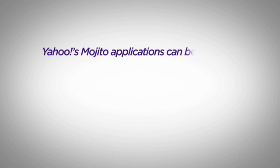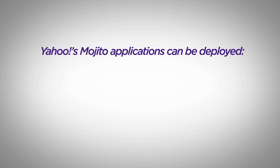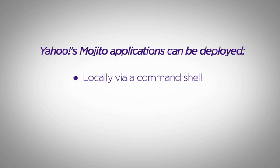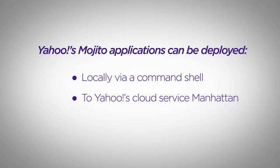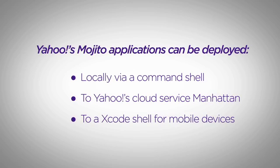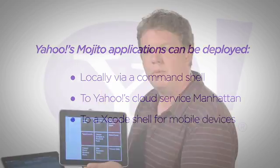So to recap, we've just taken the same Mojito application and without changing any configuration or code, we've run it locally on my laptop, we've used Grasshopper to deploy it out to the cloud to Manhattan, and we've also deployed it from my laptop to a mobile device. And this is just one example of a mobile device that we can deploy Mojito applications to. So now we're seeing it running in three different places all within a matter of minutes. We'll see you next time.